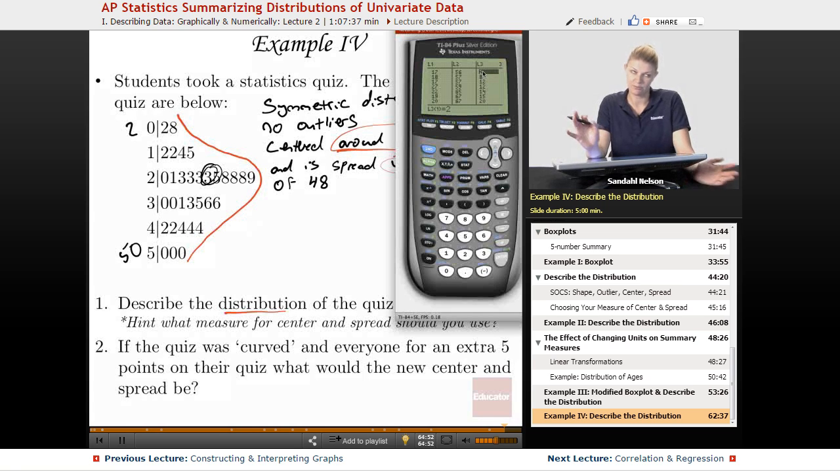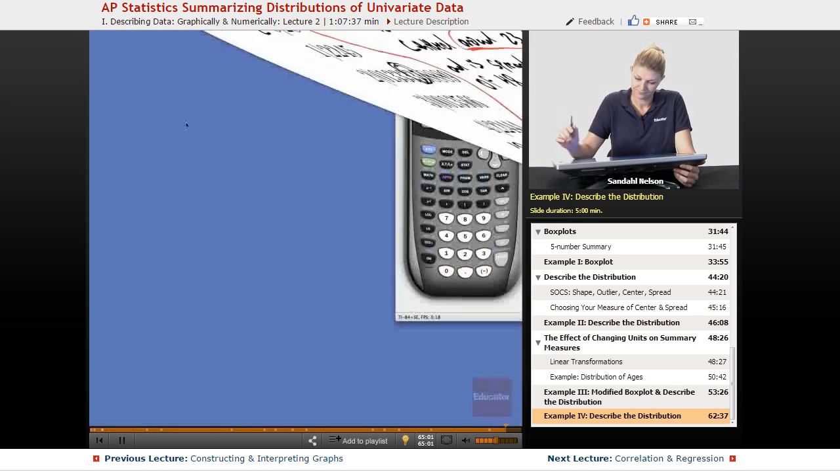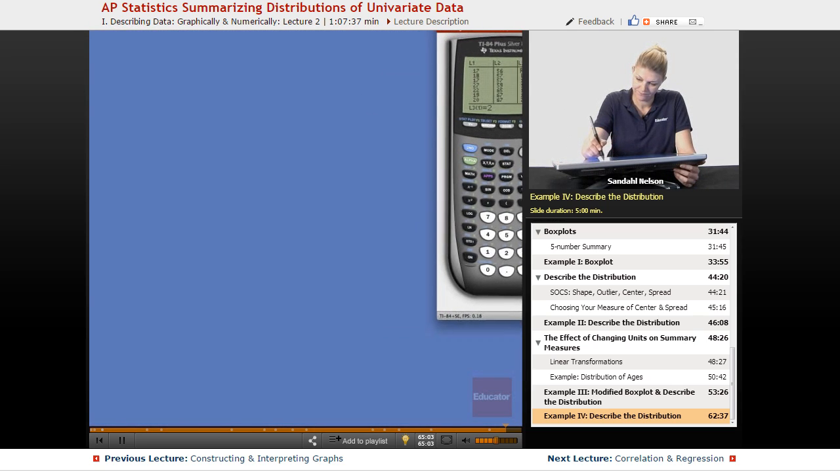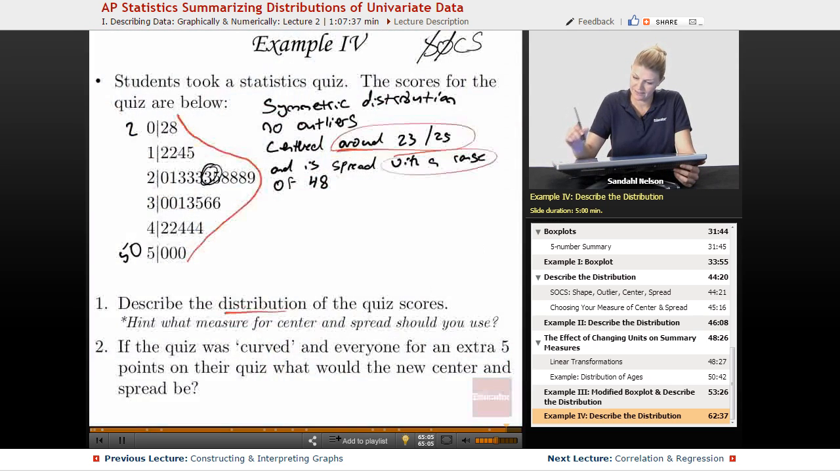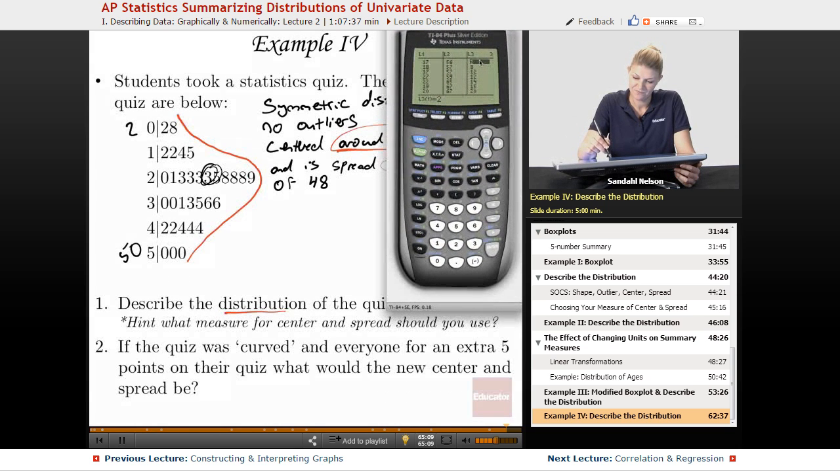So now you're putting your numbers in, or you have put your numbers in. 0, 2 was 2. 0, 8 was 8. So we have our numbers. Now that I have my numbers, I can go to stat, calc, one var stats, and now they're all in list 3. So I see that my mean was 29 and my standard deviation was 12.6.